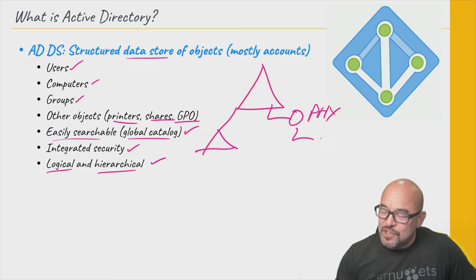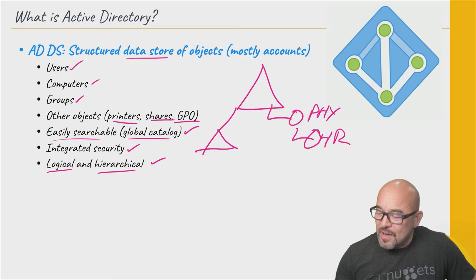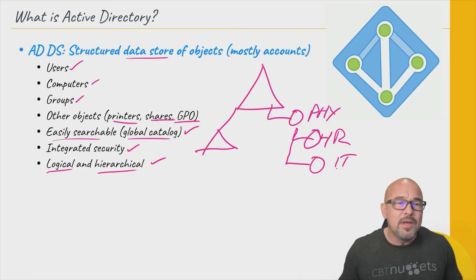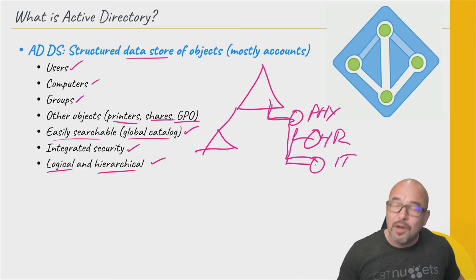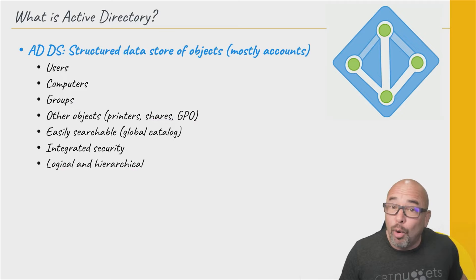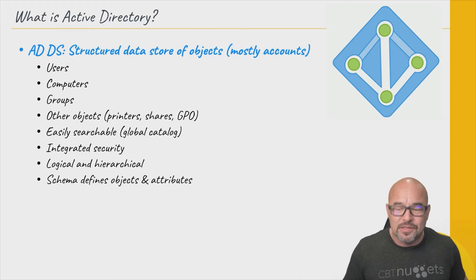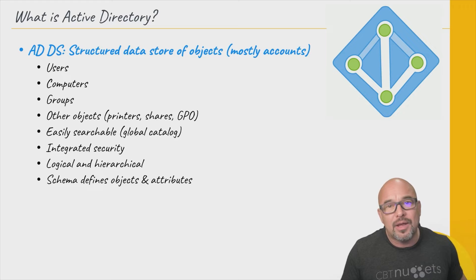Within Phoenix, you might have a department — maybe this is HR — and that's another organizational unit. You may also have other OUs underneath Phoenix, such as for the IT department and all different kinds of departments. The point is they're all hierarchical, same with our domains and child domains. It's important that they are logical and hierarchical so that they're easier to think through when you're trying to find things. It also helps, just as humanly speaking, to be able to see the kind of hierarchy involved.